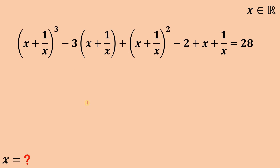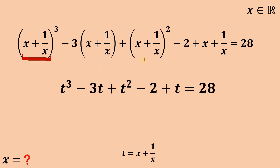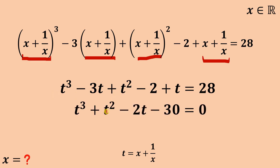Now, to simplify this equation, we're going to replace x plus 1 over x with t. Our new equation becomes t cubed minus 3t plus t squared minus 2 plus t equals 28. Replacing all x plus 1 over x with t and combining like terms, we get t cubed plus t squared minus 2t minus 30 equals 0.